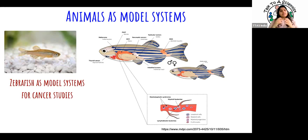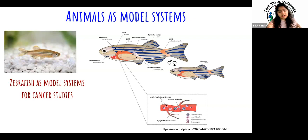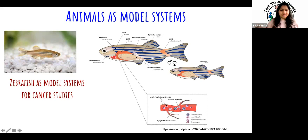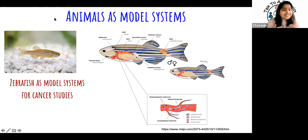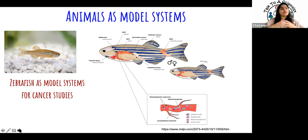For example, zebrafish are used in cancer studies because there are aspects of cancer that can be replicated in a zebrafish model. But what's not similar between zebrafish and us? We don't have gills — the way we breathe is different, and we don't live in water. Despite these differences, zebrafish still serves as a really good model because there are some aspects that are actually very similar.